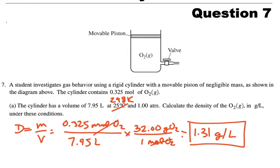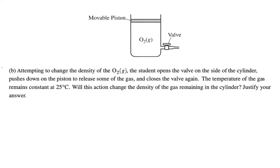And that is worth one point so far from this four-point question. Now, part B, attempting to change the density of the oxygen, the student opens a valve on the side of the cylinder, pushes down on the piston to release some of the gas, and closes the valve again.